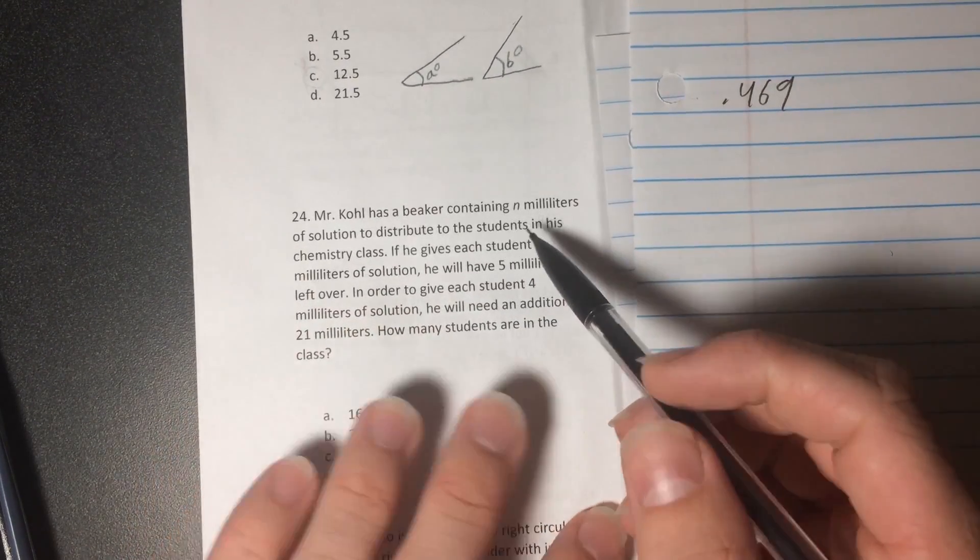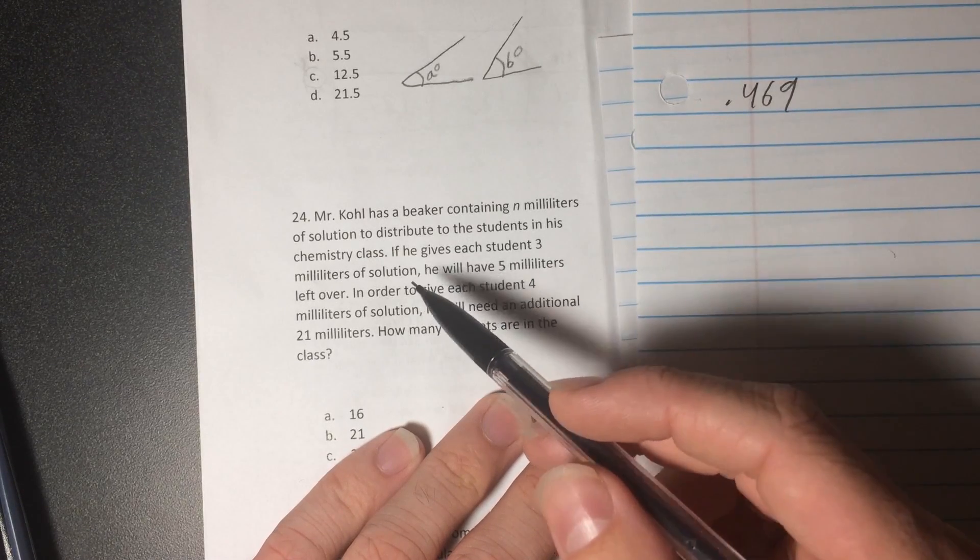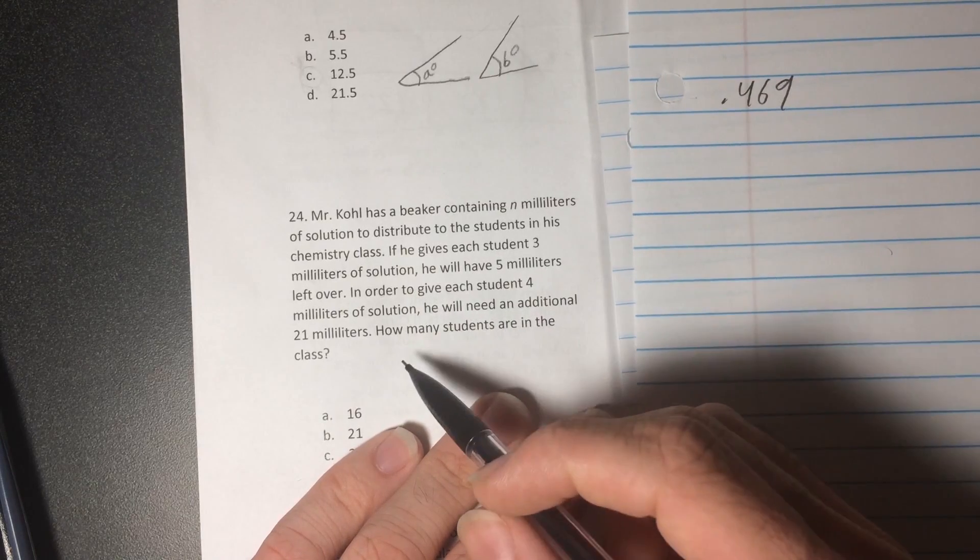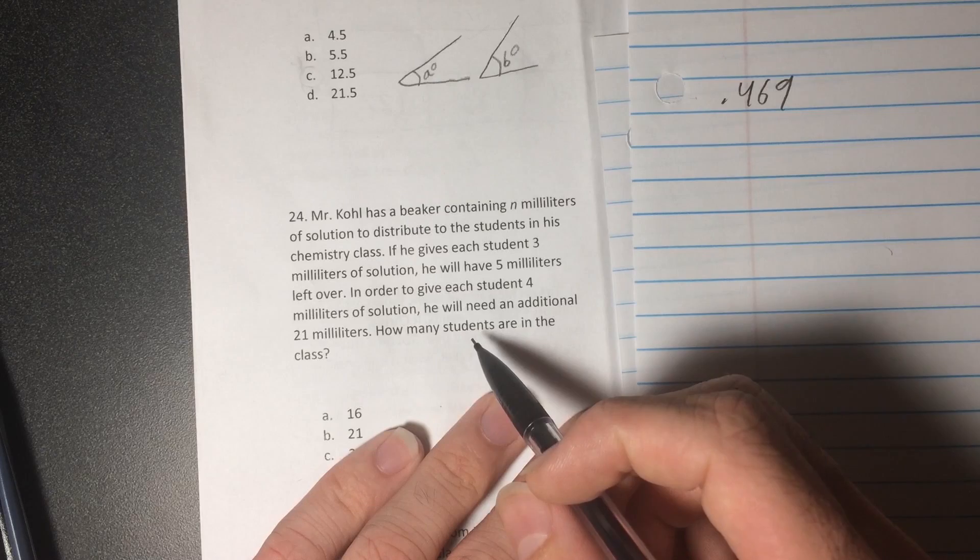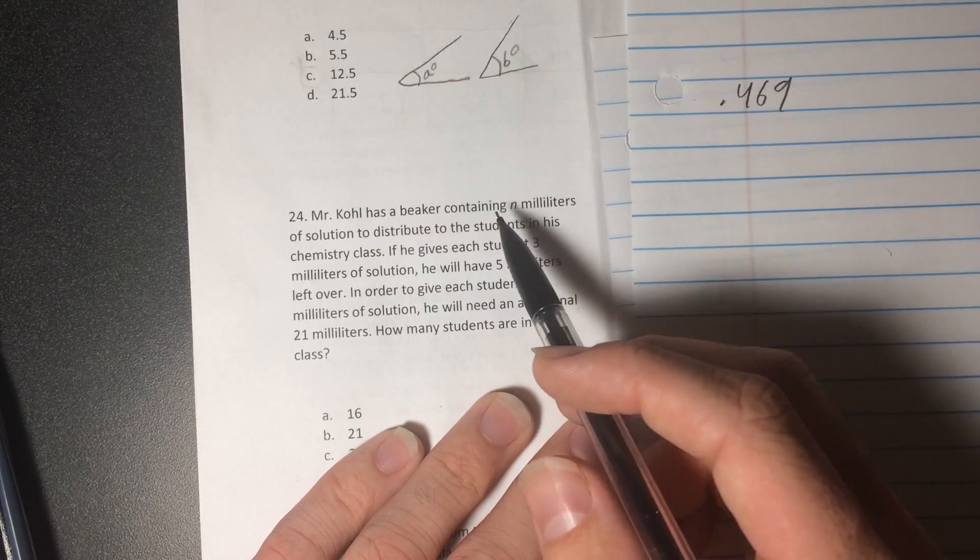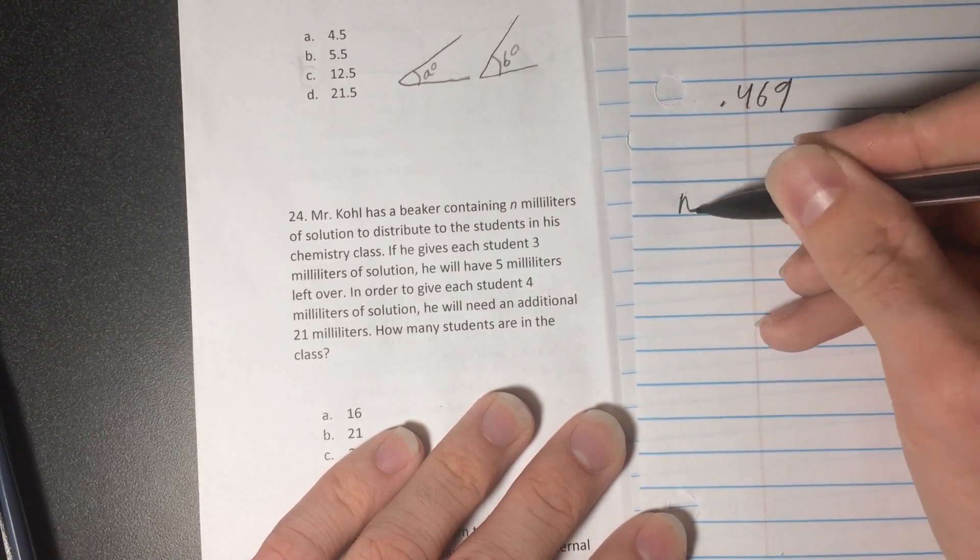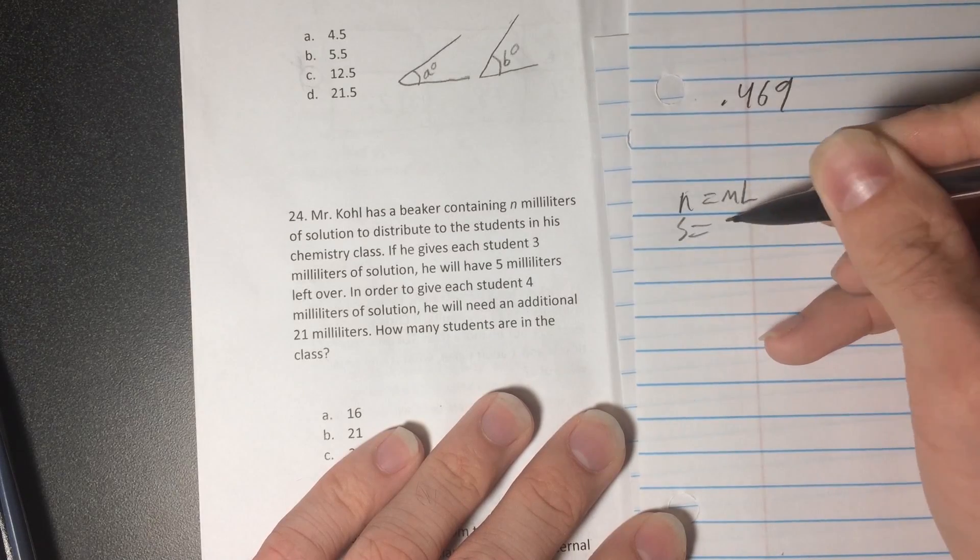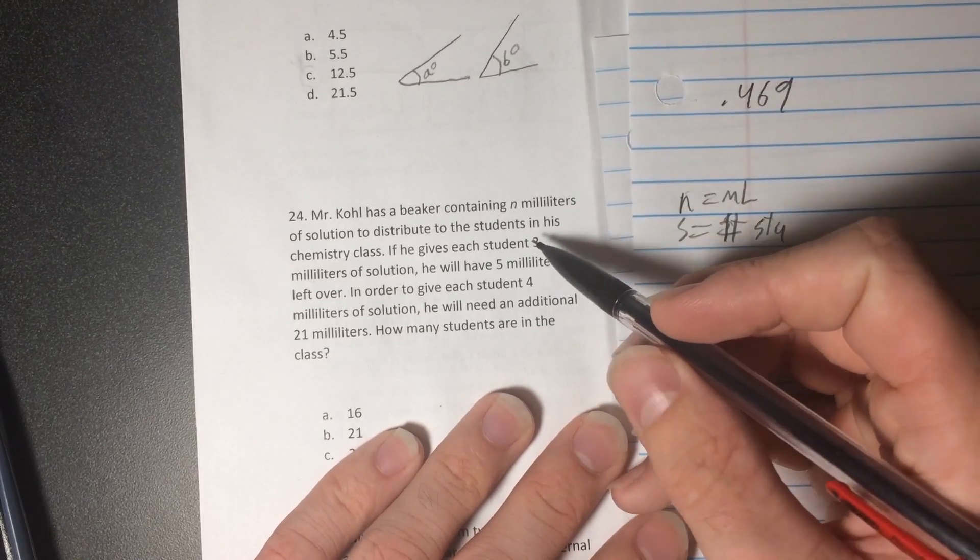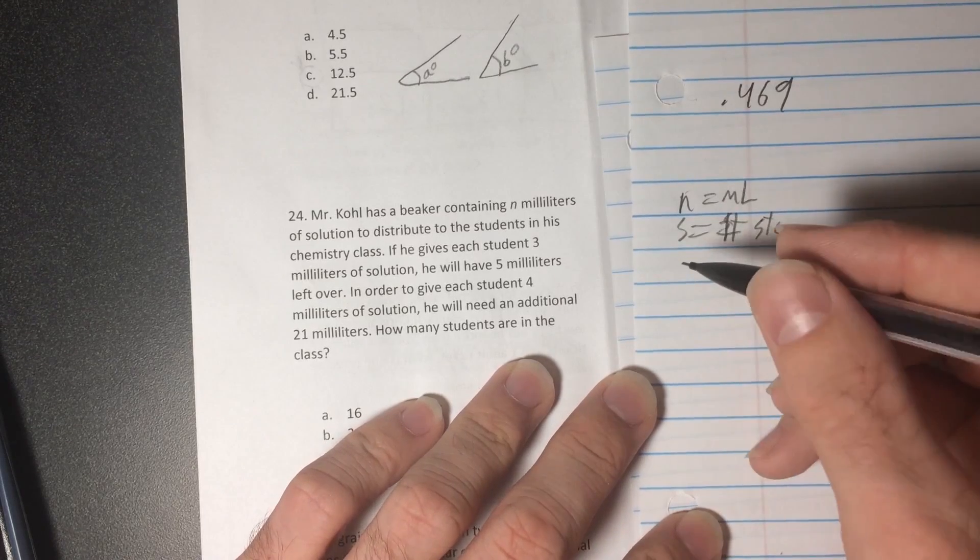Let's move on to the next one. Mr. Cole has a beaker containing N milliliters of solution to distribute to the students in his chemistry class. If he gives each student 3 milliliters of solution, he will have 5 milliliters left over. In order to give each student 4 milliliters of solution, he will need an additional 21 milliliters. How many students are in the class? So we want to find out how many students. He has given us N milliliters, so we want to relate these two things. N equals milliliters and S equals number of students.